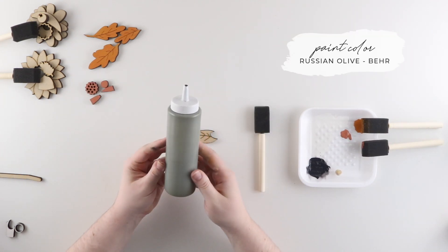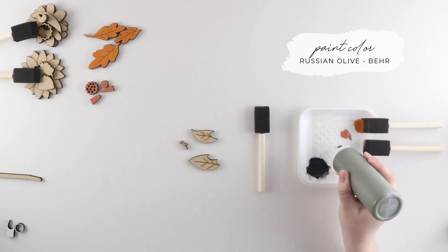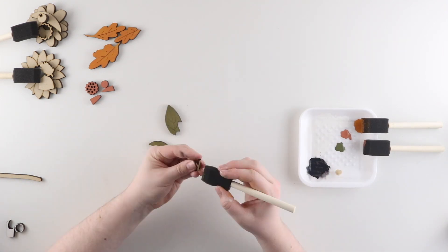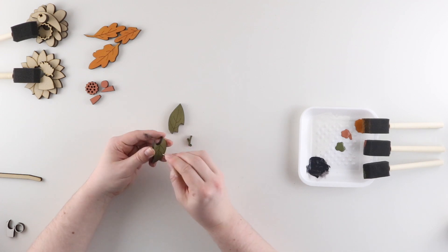Next up is Russian Olive by Bear. Keep in mind that you can do this project in any colors you like and with any type of paint that you like.